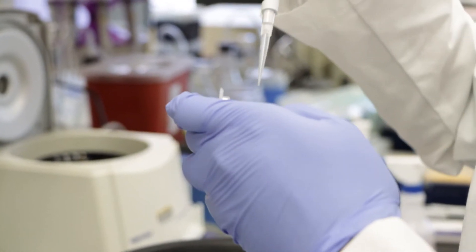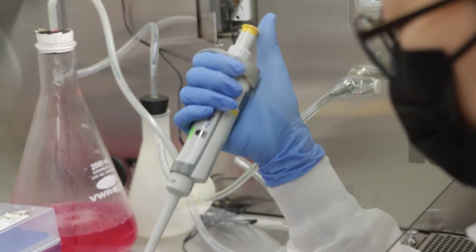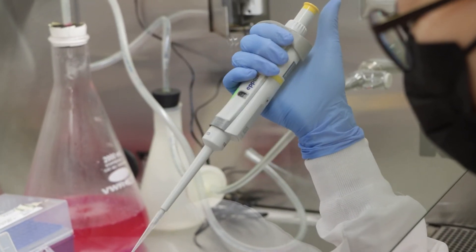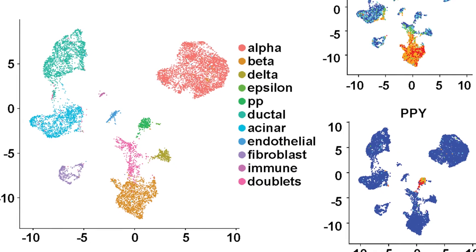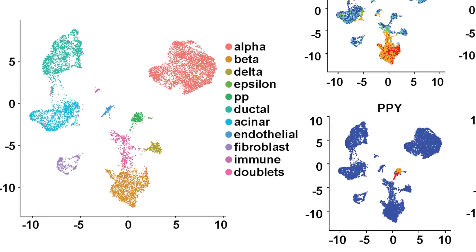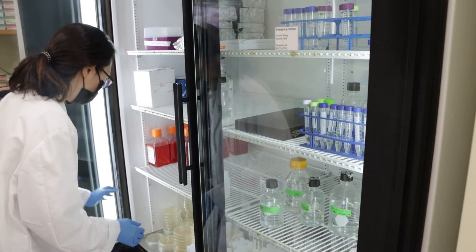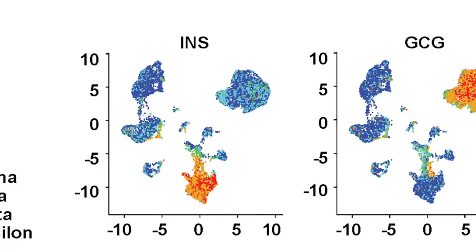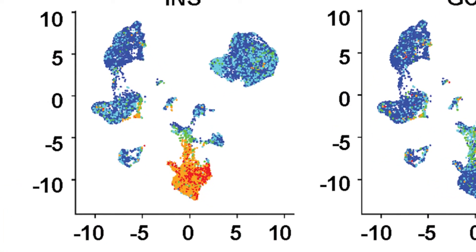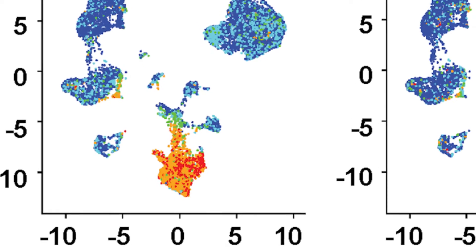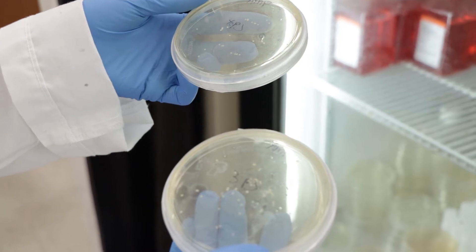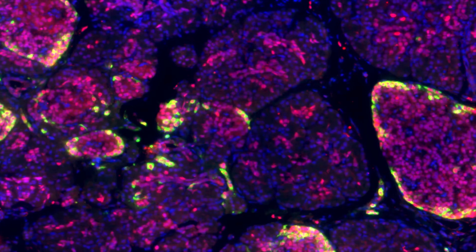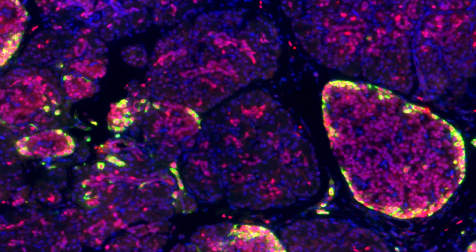Single-cell transcriptomics is one of the coolest technologies. What it allows you to do is study the entire gene expression patterns of the cells of your interest. Going back to our diabetes sample, we want to study beta cells — diabetes is generally caused by beta cell dysfunction. With single-cell transcriptomic analysis we can compare the beta cells within diabetes patients and control patients to see what is different.